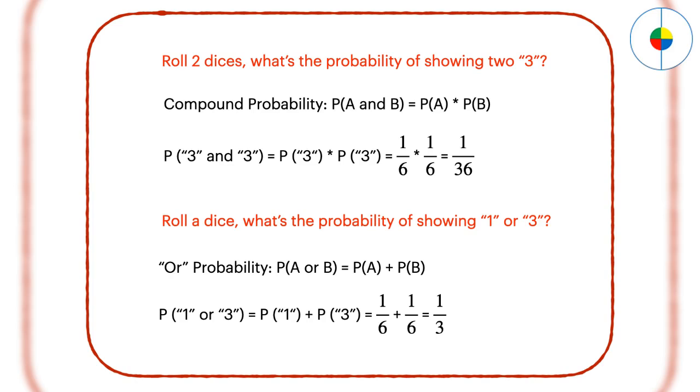To calculate the or probability, those events should happen independently from each other. Here is the formula. For example, if you roll a dice, what will be the probability of 1 or 3?